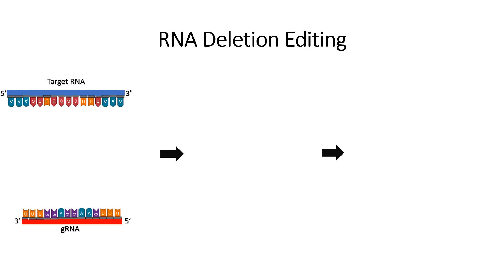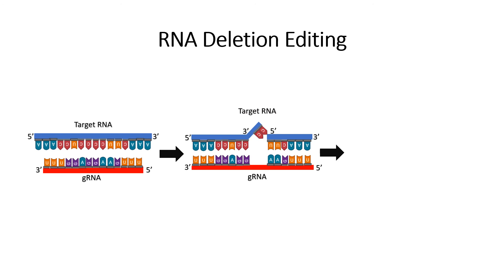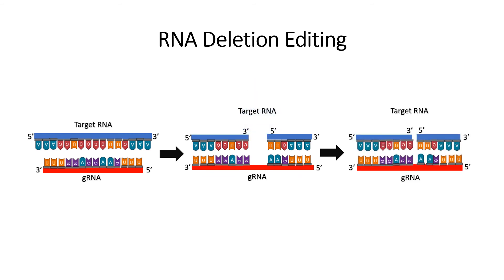Now let's move on to RNA deletion editing. In this form of RNA editing, it is a similar story where a guide RNA and a target RNA with partial homology bind to one another, creating a bubble of non-homologous sequence at the region of mismatch. As before, an endonuclease will come in and nick the target RNA, creating a flap with the non-homologous nucleotides at the three-prime end of the five-prime cleavage product. Then an exonuclease will come in and chew off those non-homologous nucleotides. A ligase will then come in and seal the nick, creating a continuous edited target RNA.